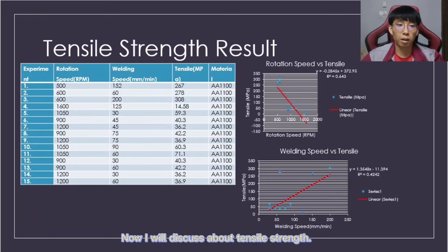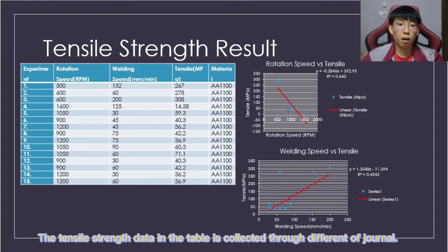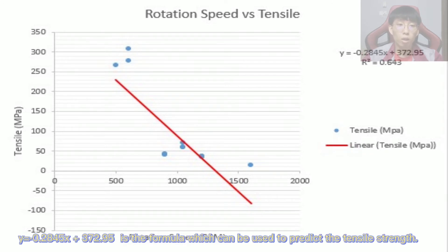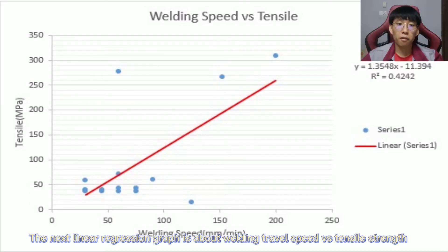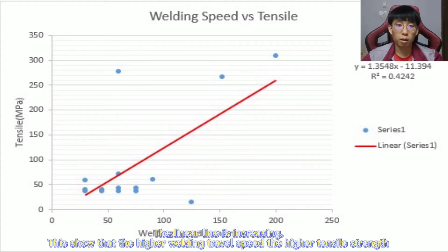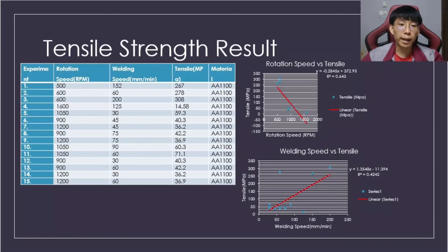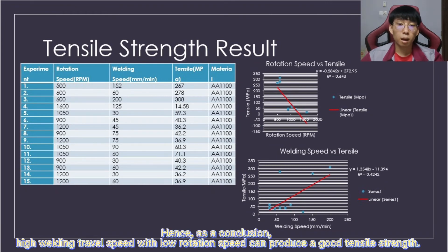Now I will discuss tensile strength. The tensile strength data in the table was collected from different journals. After collecting the data, linear regression graphs were made using Microsoft Excel. There are two linear regression graphs. For rotation speed versus tensile strength, the linear line is decreasing, showing that higher rotation speed gives lower tensile strength. The formula Y = -0.2845x + 372.95 can be used to predict tensile strength. For welding travel speed versus tensile strength, the linear line is increasing, showing that higher welding travel speed gives higher tensile strength. The formula Y = 1.3548x + 11.394 can be used to predict tensile strength.